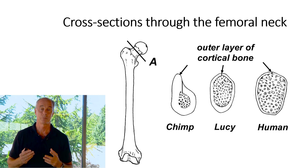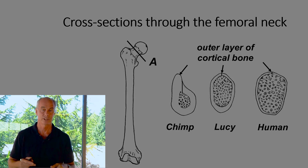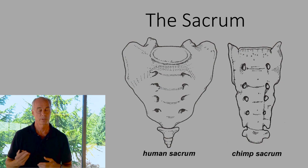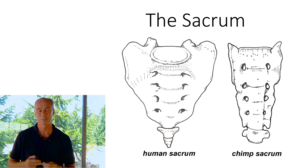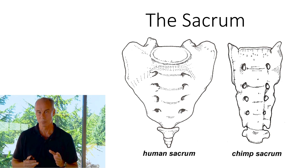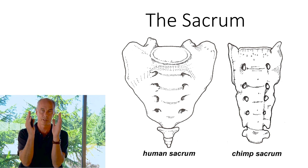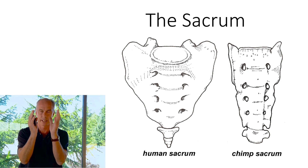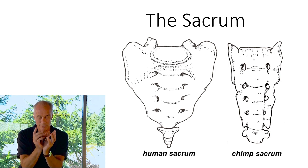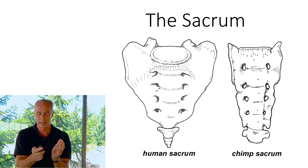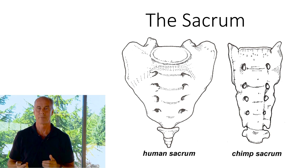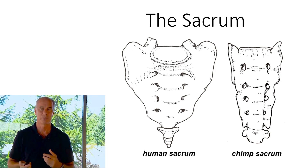Going up into the sacrum, the picture on the left shows the human sacrum's triangular shape versus the more rectangular chimp sacrum. The triangular human sacrum has a self-locking mechanism where vertical forces from bipedality force it to lock down into the innominates, creating a more stable structure.